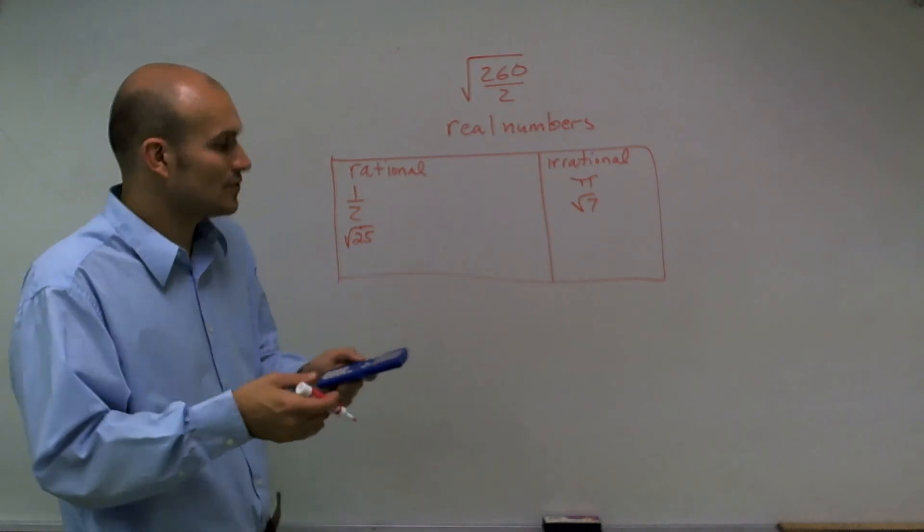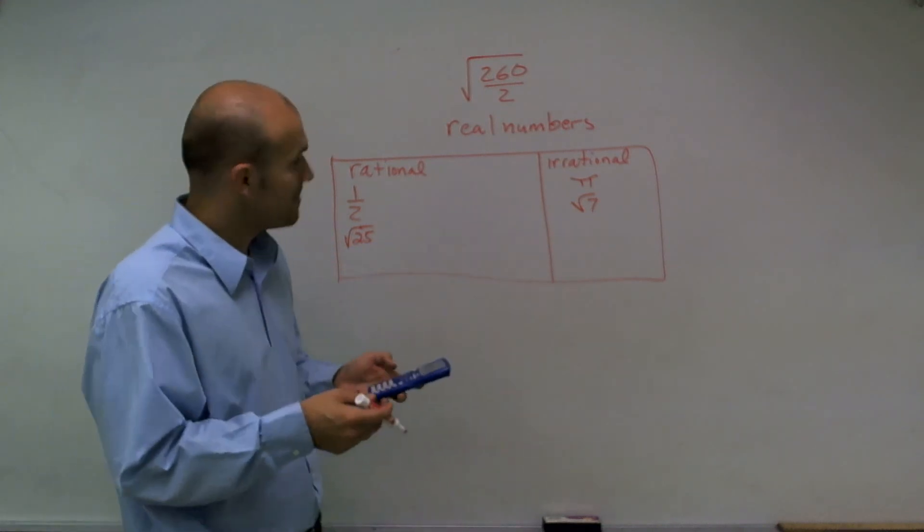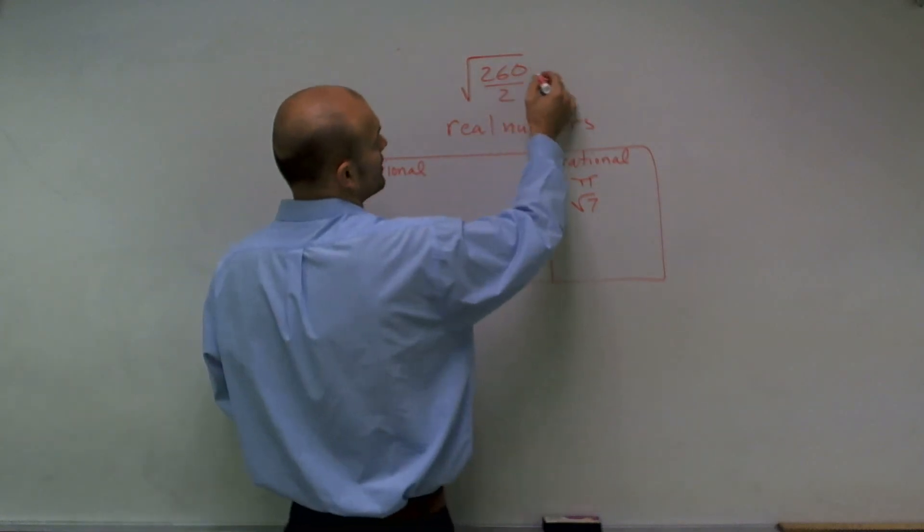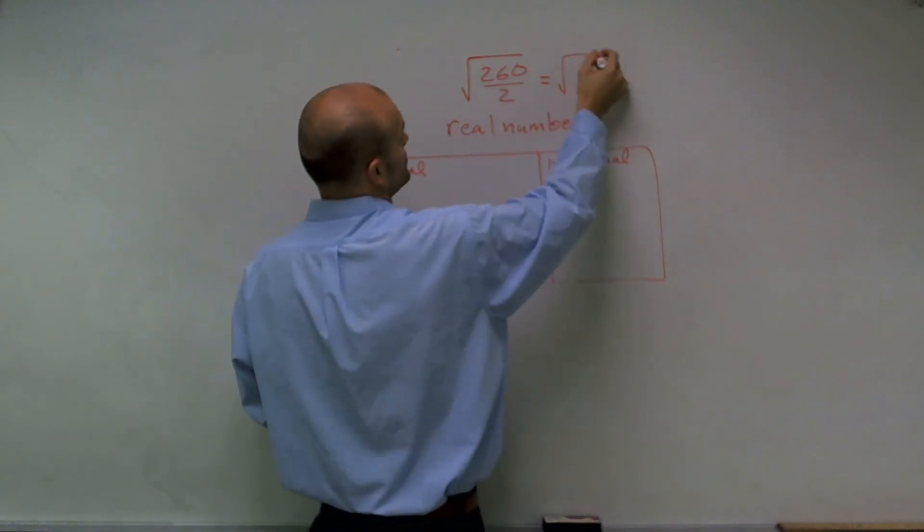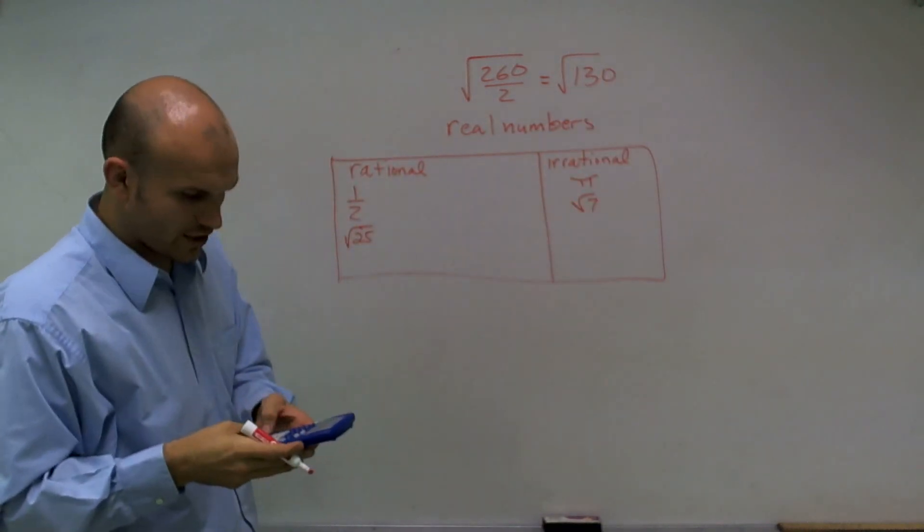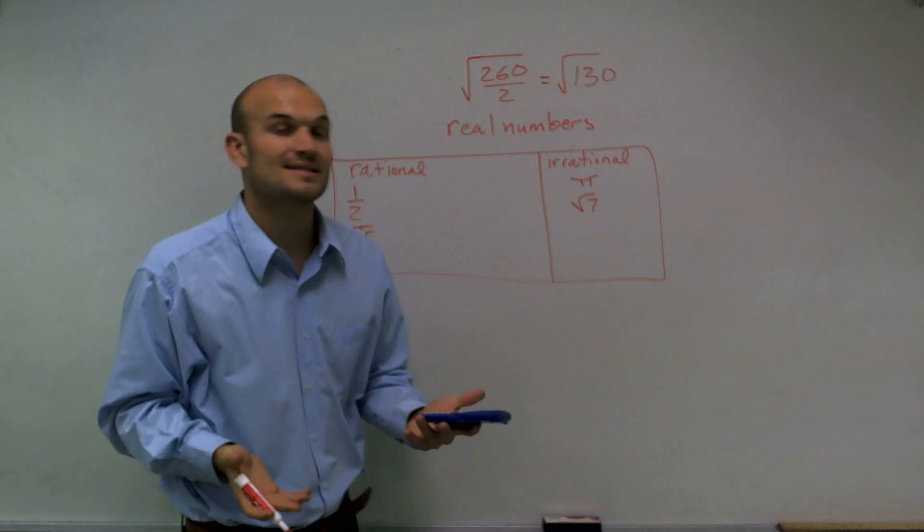However, radical 7, that equals a decimal that goes on forever. So to check this problem out, what I'll do is I'll simply just take the 260 divided by 2 equals square root of 130.